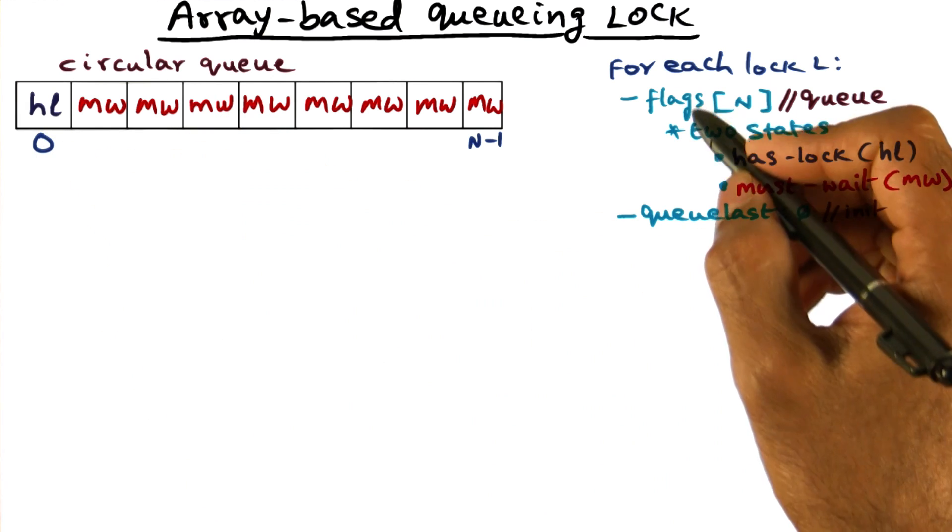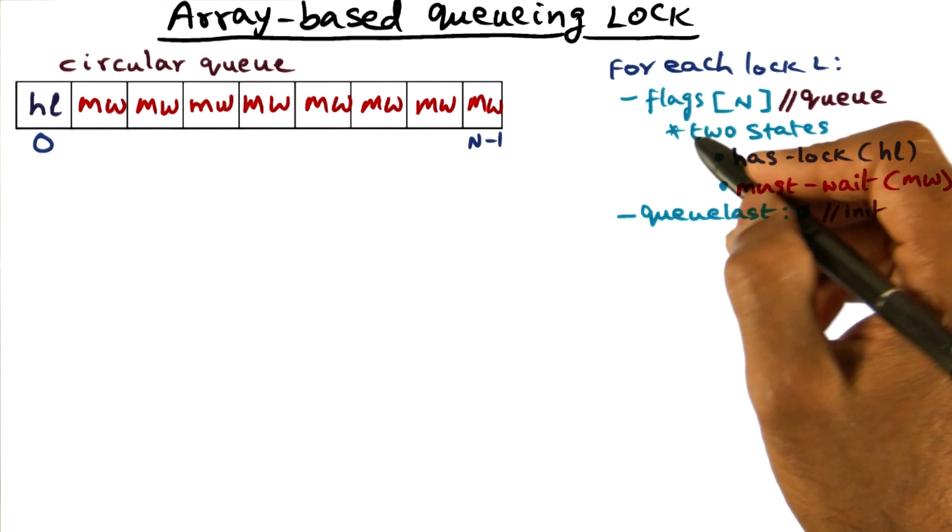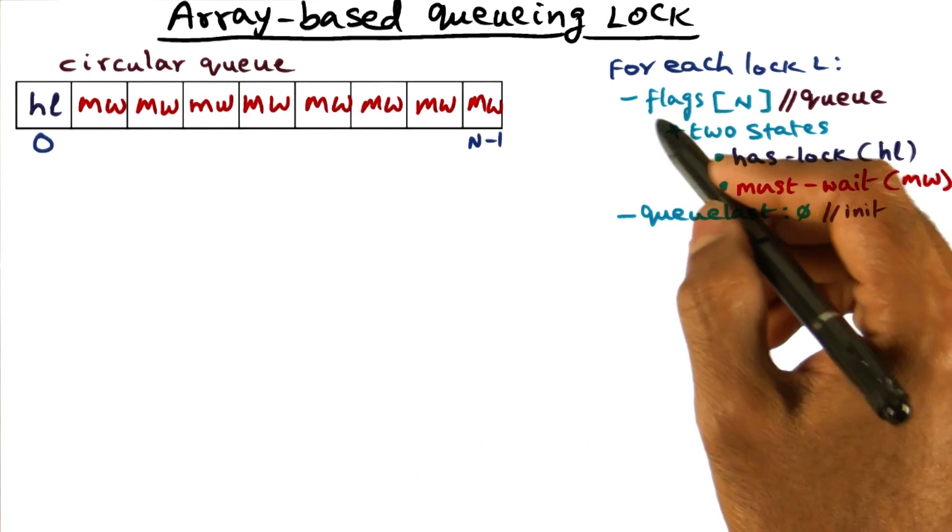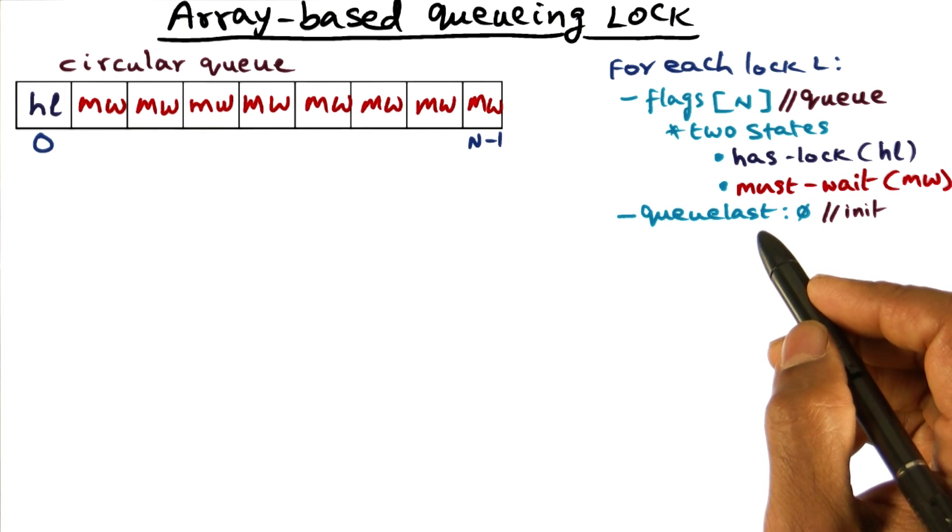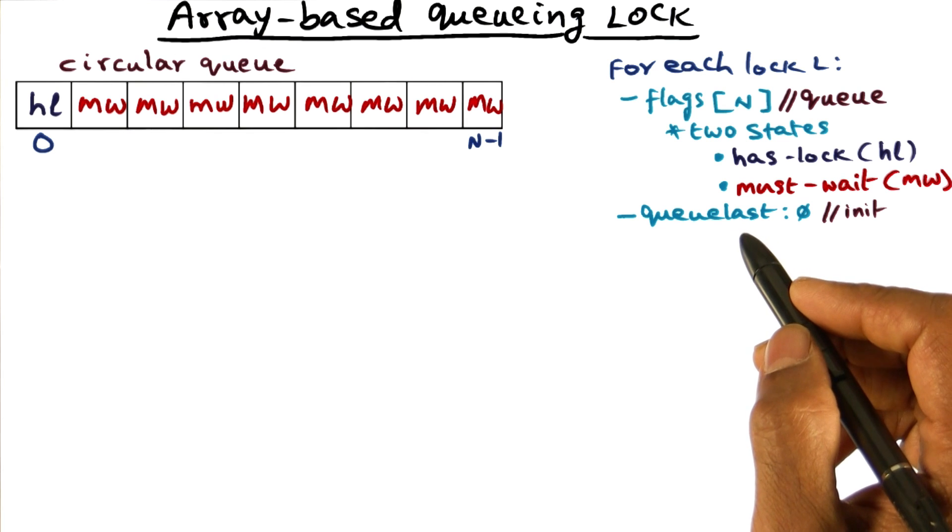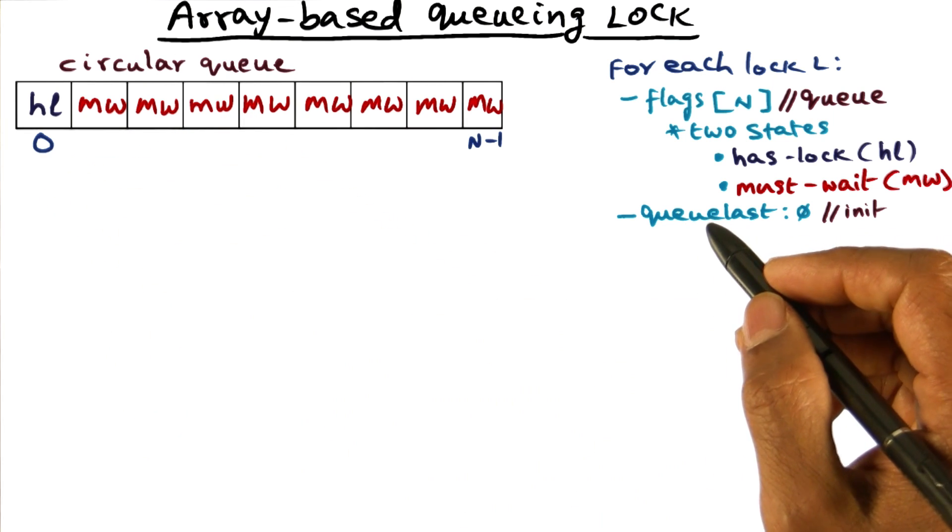And so these two are the two data structures associated with every lock. So every lock that you have in your program, the operating system is going to assign two data structures for you. One, which is the circular queue represented by the flags array. And the other is the queue last variable, which is saying what is the spot that is available for you to queue yourself in this particular array.